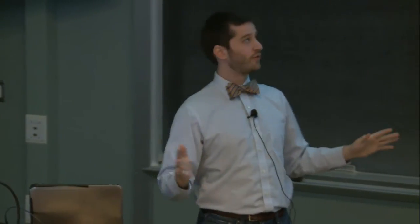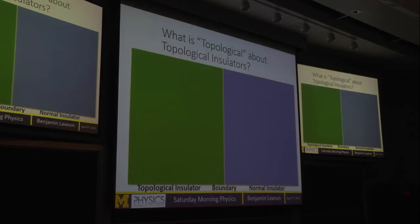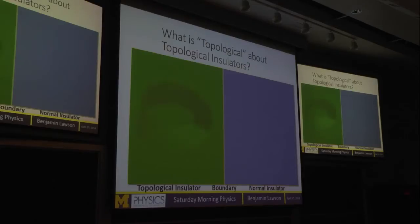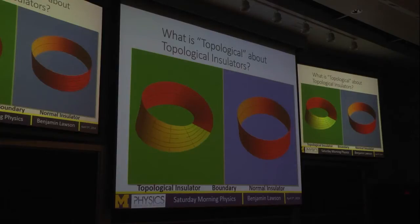So what does topology have to do with physics? What's topological about topological insulators? If we look at the quantum mechanics of these materials, there's a certain quantum property of the electrons in the topological insulator that is much like a Möbius strip, whereas in a normal insulator the same quantum property is more like a loop. I'm going to argue these two objects are topologically different. I have here, thanks to the demo people at Michigan, a Möbius strip and a normal loop.